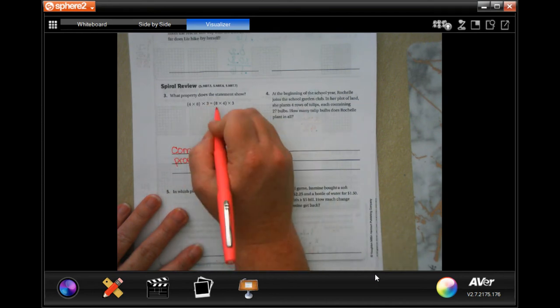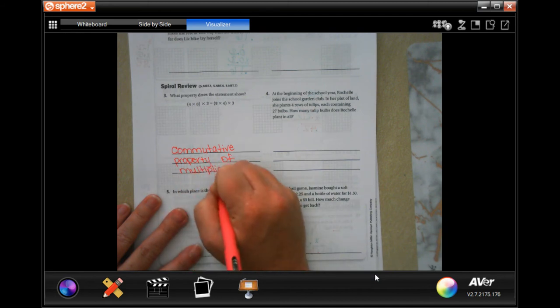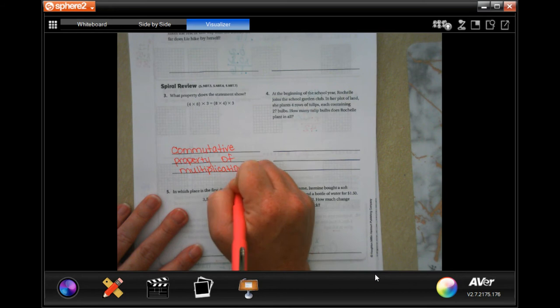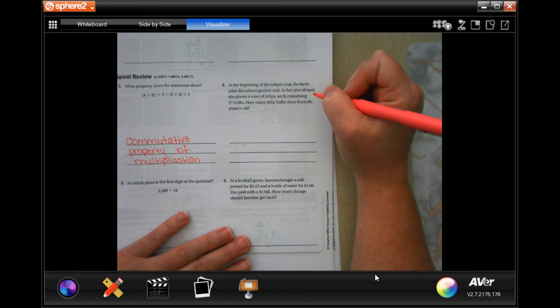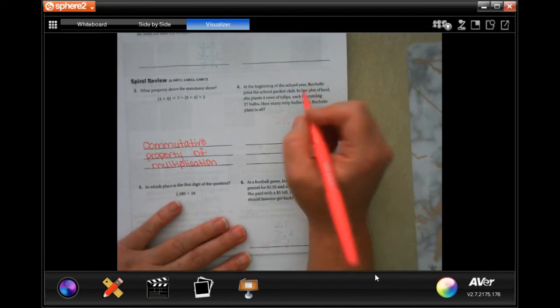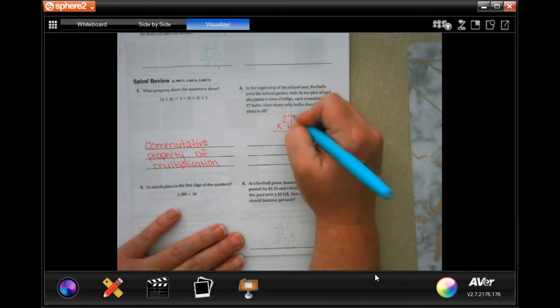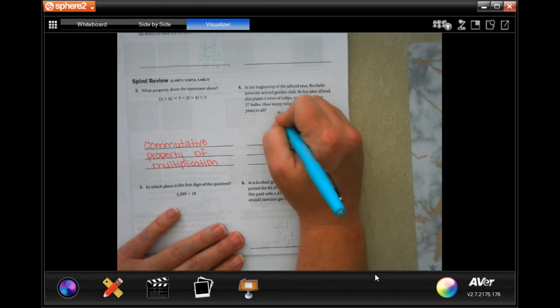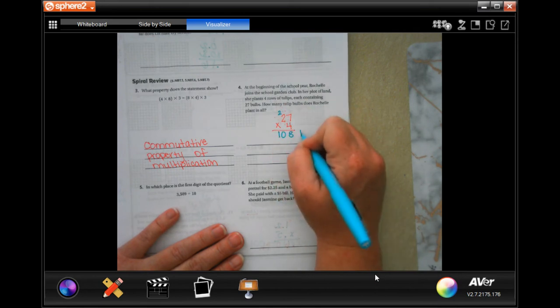And it's going to be of multiplication because we're using multiplication. At the beginning of the school year, Rochelle joins the school garden club. In her plot of land, she grows four rows of tulips, each containing 27 bulbs. How many tulip bulbs does Rochelle plant in all? So, 27 in each row, and there are four rows. 4 times 7 is 28. Carry 2. 4 times 2 is 8. Plus 2 more is 10. 108 bulbs.